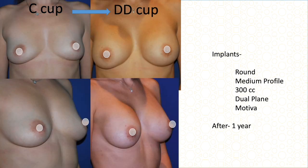This C cup patient had good breast tissue and good elasticity but wanted more fullness. We decided on a 300 cc medium-profile dual-plane implant. From C cup to double D cup — this was after one year.